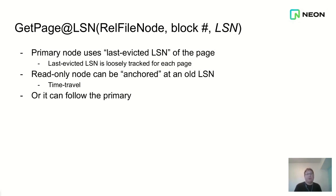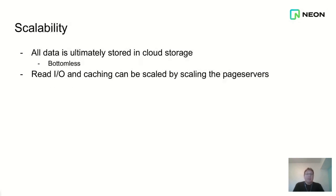You can just launch a new read-only node and request to see the data as it was at an older point in time. So if you accidentally drop a table, you can just launch a new node and see the data as it was before the accident happened. Or you can set up a read-only node that follows the primary but lags behind if you want that. Cloud storage gives you bottomless storage, and read I/O and caching can be scaled by scaling out the page servers.